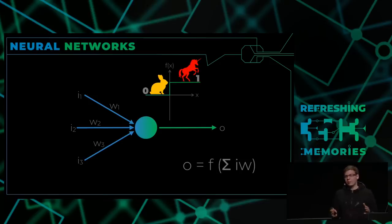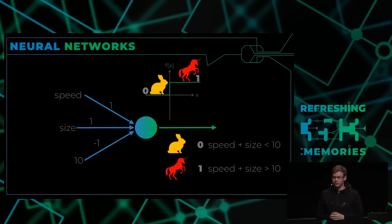Let me give you an example of how we can make the previous example with rabbits and unicorns work with such a simple neuron. We just use speed, size, and the arbitrarily chosen number 10 as our inputs, and the weights 1, 1, and minus 1. If we look at the equations then we get for all negative numbers, speed plus size being less than 10, a zero, and a one for all positive numbers being speed plus size greater than 10. This way we again have a separating line between unicorns and rabbits.